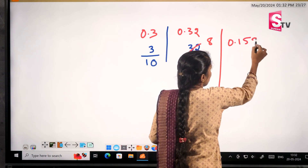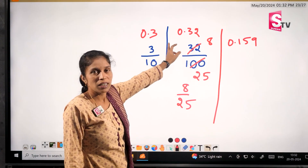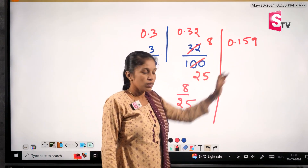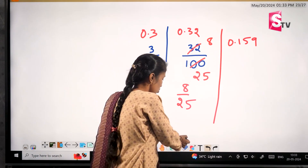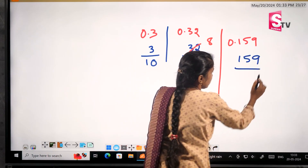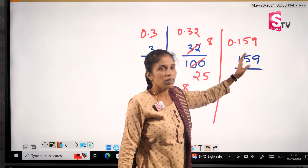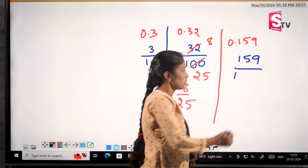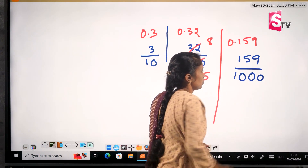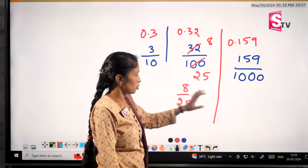Next one: 0.159. So we will convert it. Point place is single digit, point place is 2 digits, point place is 3 digits. So 159 over 1000. Point place is 1, point place is 3 digits — 3 zeros, that is 1, 2, and 3. So we will divide by divisible.